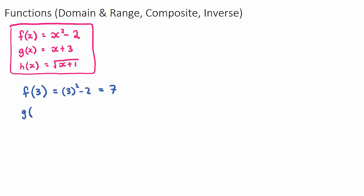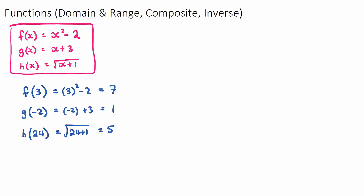For g(-2), find the g(x) function and replace x with negative 2: negative 2 plus 3 equals positive 1. And for h(24), substitute 24 into h(x): the square root of 24 plus 1 is the square root of 25, which is 5. So to find f, g, or h of a number, just find that function and substitute in.